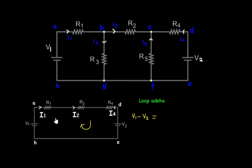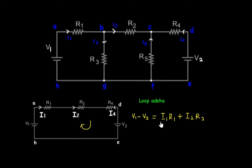The voltage drops in this loop: the current across R1 is moving clockwise, so it's positive — the voltage drop is I1 times R1. The current across R2 is also positive, giving a voltage drop of I2 times R2. The current across R4 is moving in the anticlockwise direction, so it's a negative current, giving a voltage drop of minus I4 times R4. So the equation is: V1 minus V2 equals I1·R1 plus I2·R2 minus I4·R4.